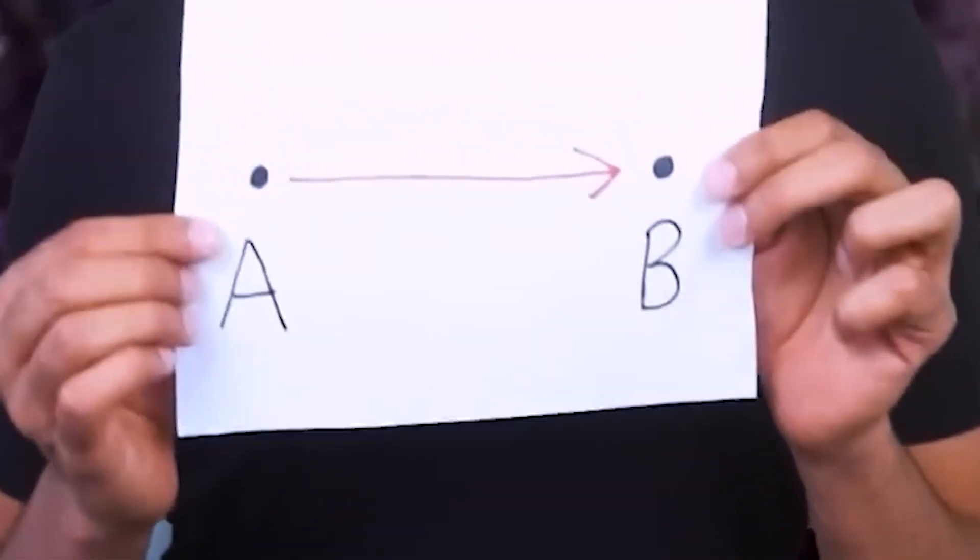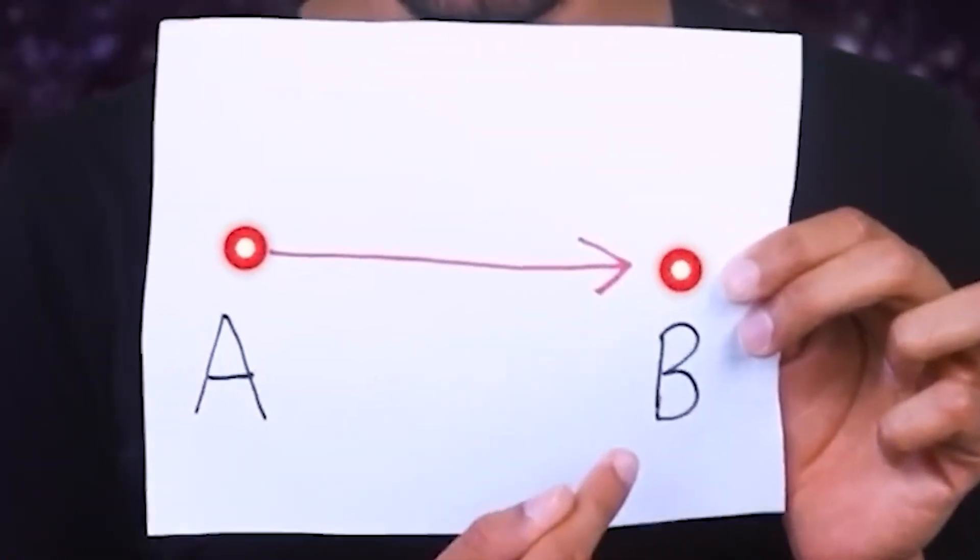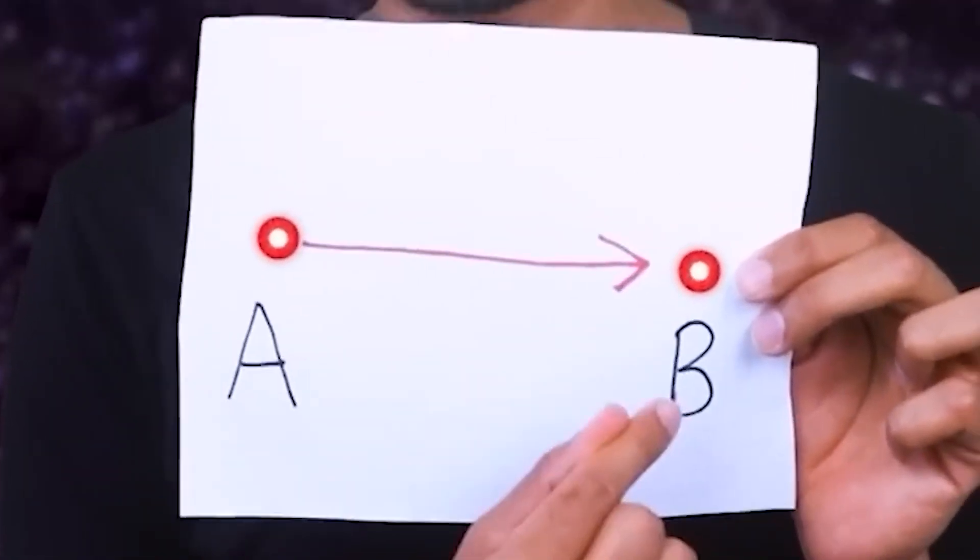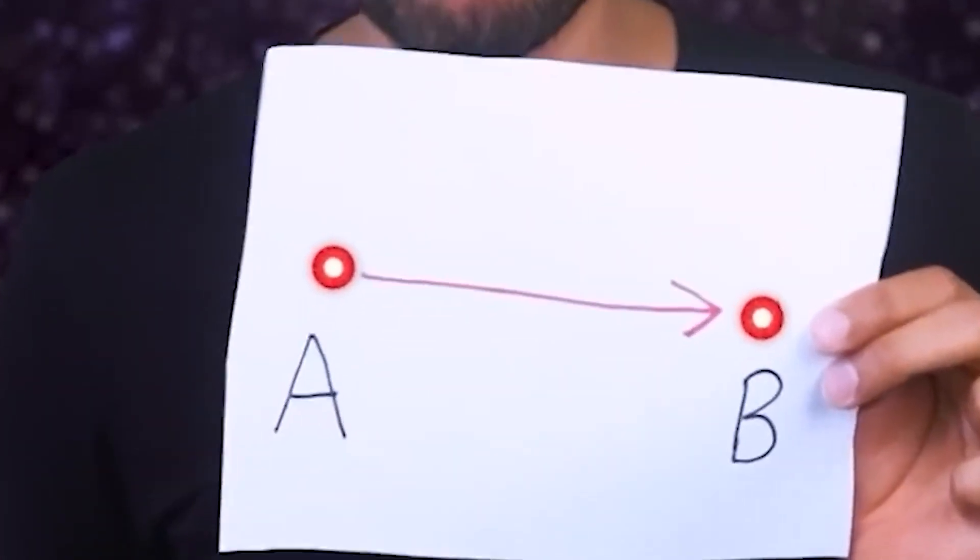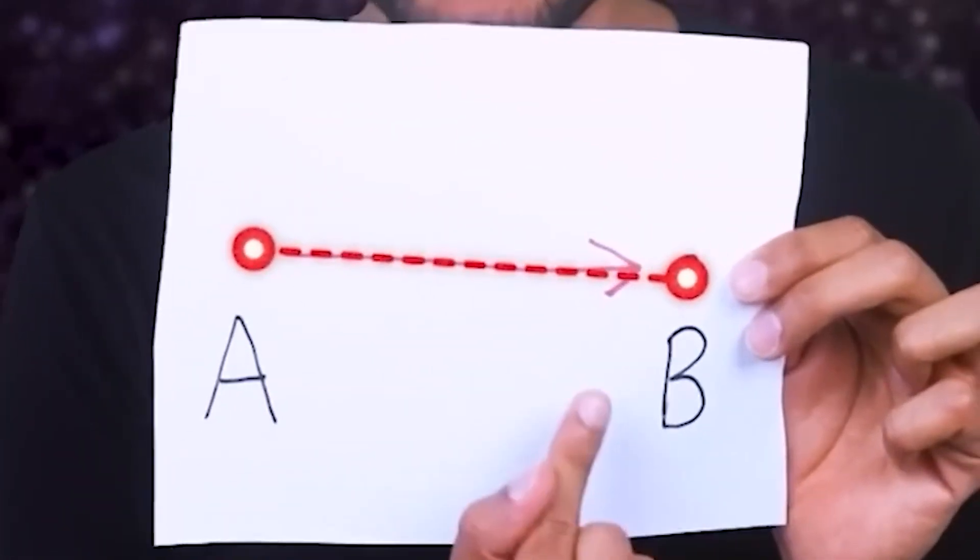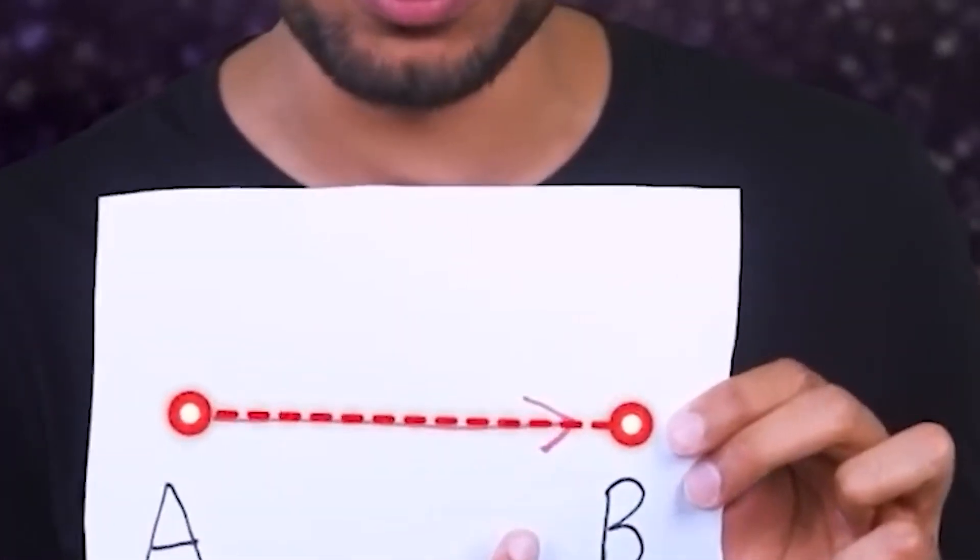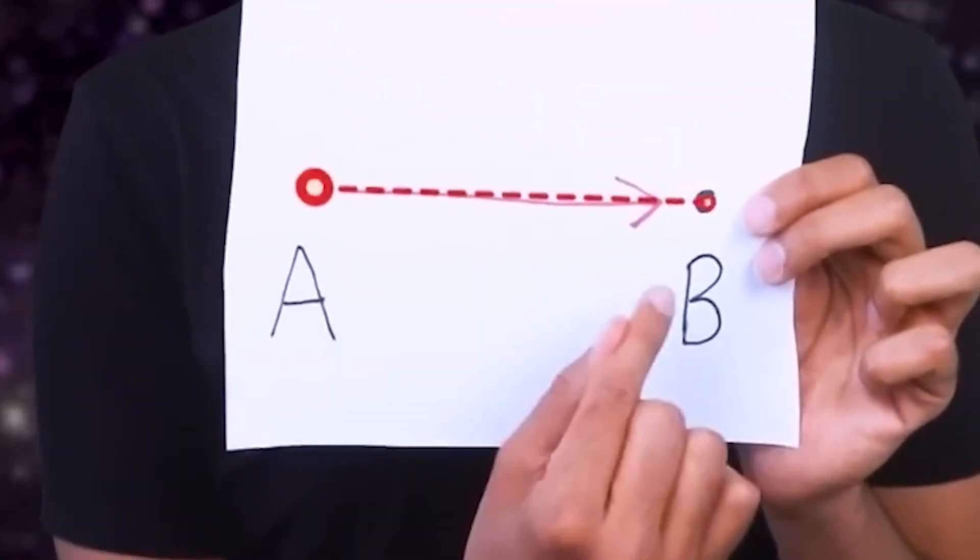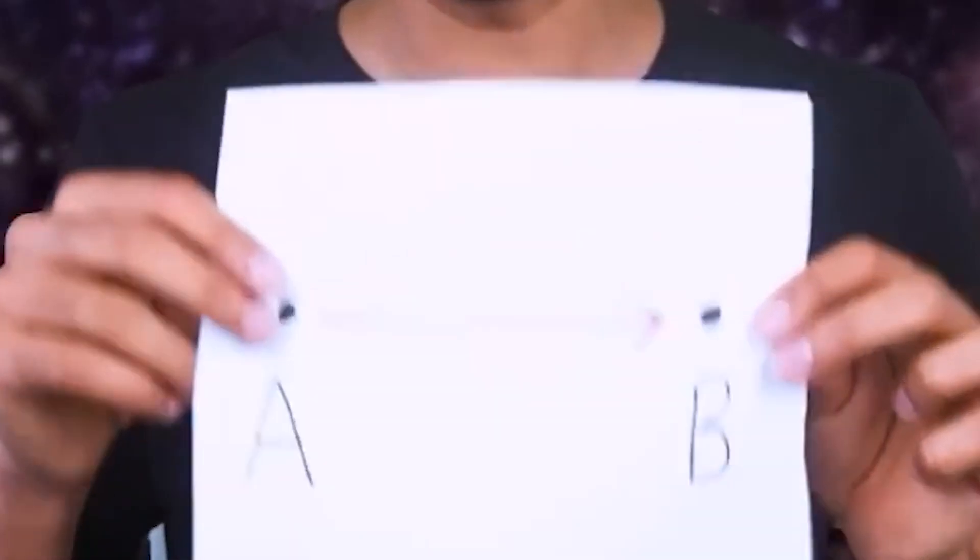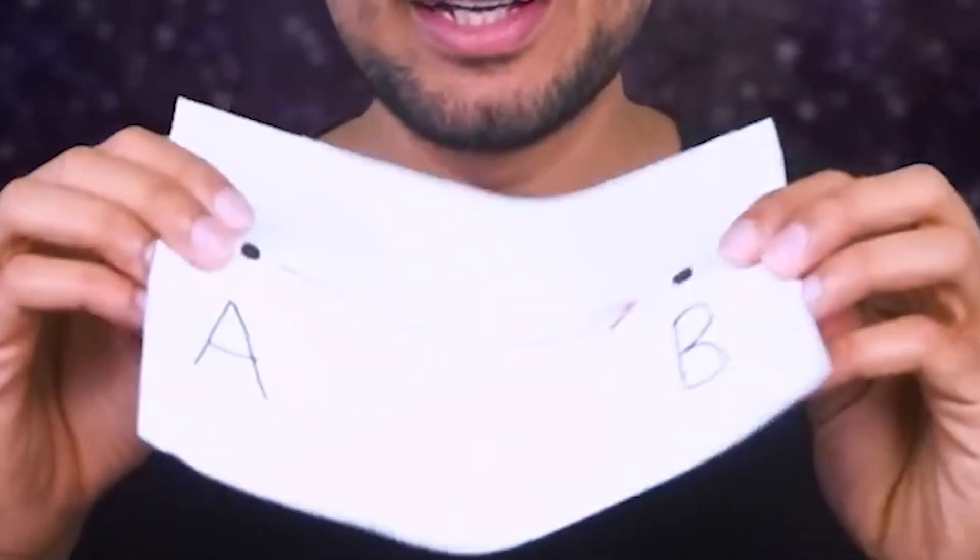Take a look at this paper. There are two points on this paper, A and B. If you want to take the shortest path from A to B, which path can you take? The straight line connecting A and B. There can be no shorter path in 2D, except the straight line connecting the two points. But if this 2D mesh is bent into 3D, new paths will appear.